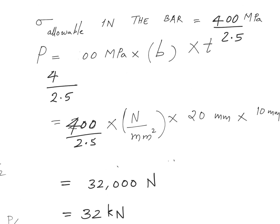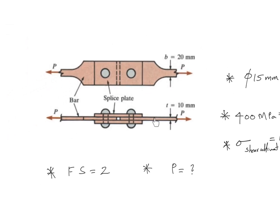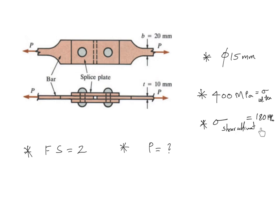So this is the maximum load carrying capability considering only the bar. I have just considered this particular fellow only, but we have two things in our design. We have rivets also in our design and rivets usually will fail in shear. This is the ultimate shear strength of the rivet material.